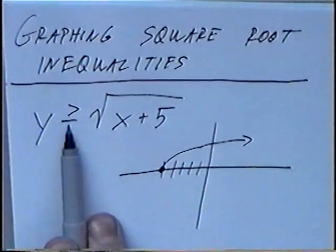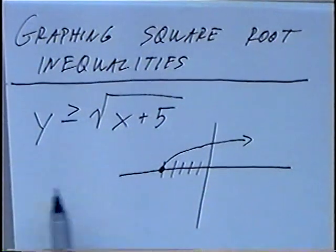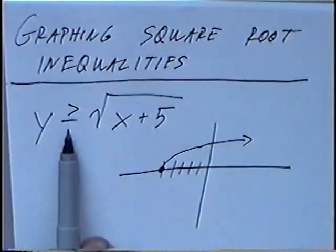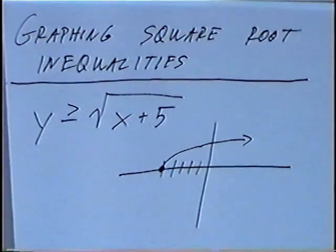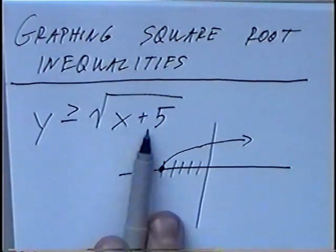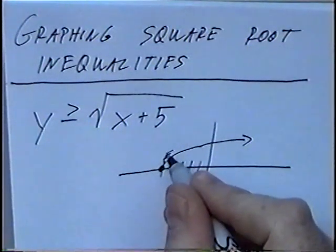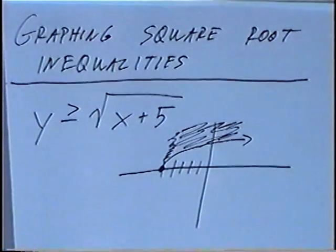It is a solid line since it's greater than or equal to. Since it's an inequality, we shade either above or below the graph. In this case it's greater than or equal to, so we shade above the graph. When shading square roots, though, we cannot go past negative 5. So to the left of negative 5, neither the top nor the bottom will be shaded. Starting at negative 5, going above the graph will be shaded for this function.